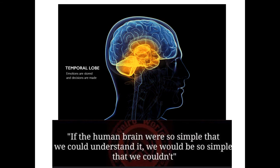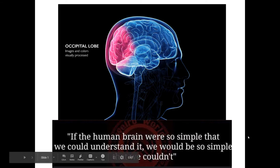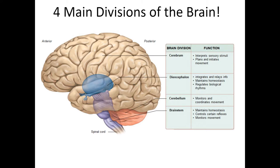This conversation will revolve around dividing our brain into primary pieces. The four major divisions are the cerebrum, the diencephalon, the cerebellum, and the brain stem.